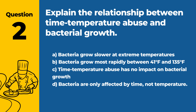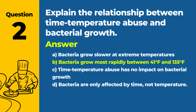Question 2: Explain the relationship between time temperature abuse and bacterial growth. a. Bacteria grow slower at extreme temperatures. b. Bacteria grow most rapidly between 41°F and 135°F. c. Time temperature abuse has no impact on bacterial growth. d. Bacteria are only affected by time, not temperature. Answer: b. Bacteria grow most rapidly between 41°F and 135°F. Time temperature abuse, particularly when food is held between 41°F and 135°F, creates an environment conducive to rapid bacterial growth.